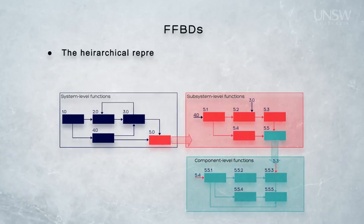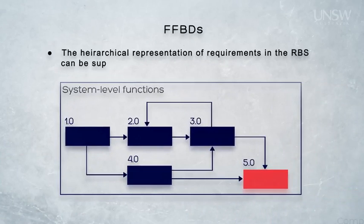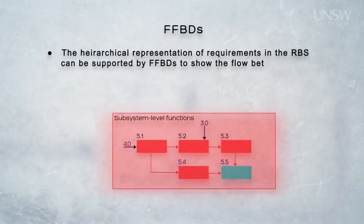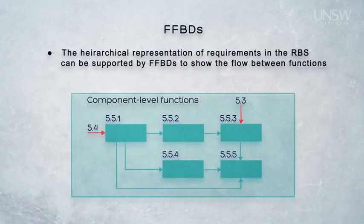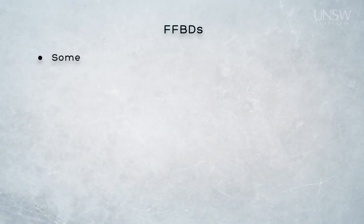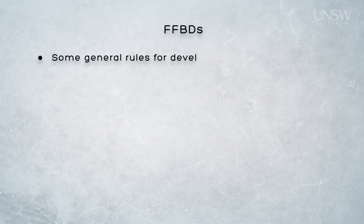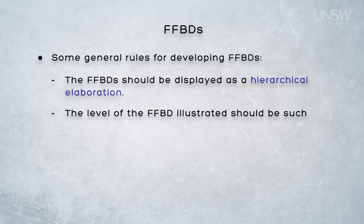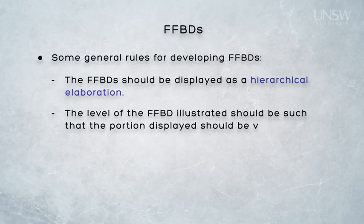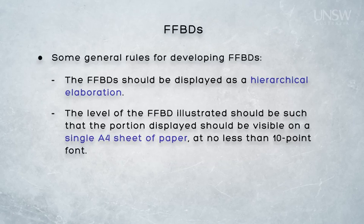The hierarchical representation of requirements in the RBS can also be supported by another tool called the FFBD — the Functional Flow Block Diagram. The value of the FFBD is that it also shows the flows between functions, not just the hierarchical description. Functional Flow Block Diagrams should also be displayed hierarchically, decomposing each level to the next level down. A single level of the FFBD must again be illustrated on a single A4 sheet at no less than 10-point font.